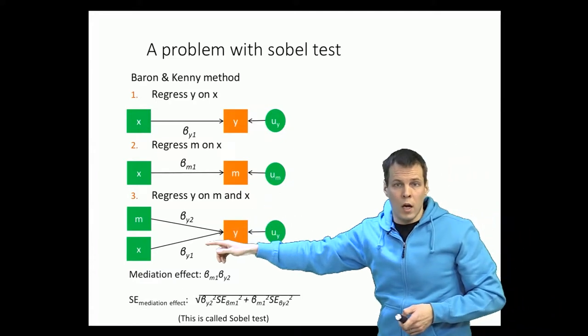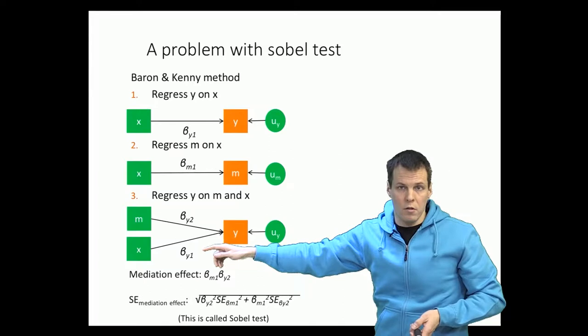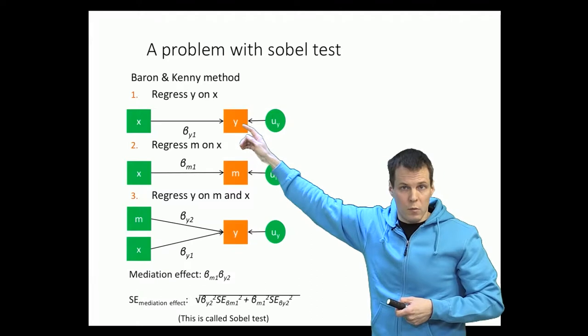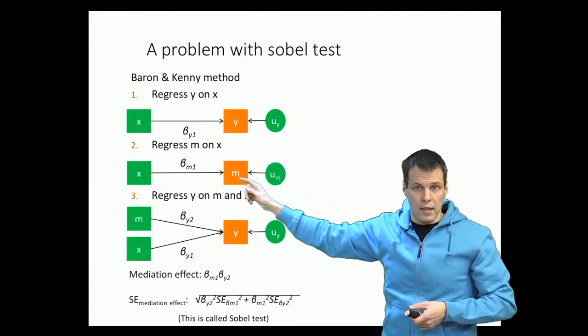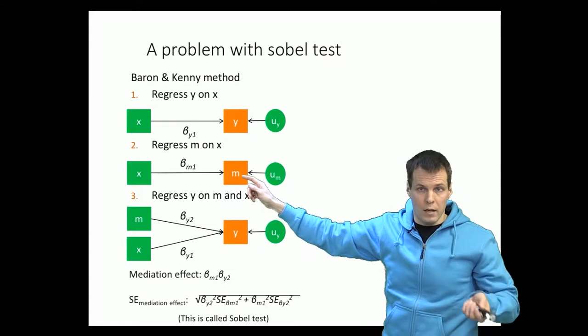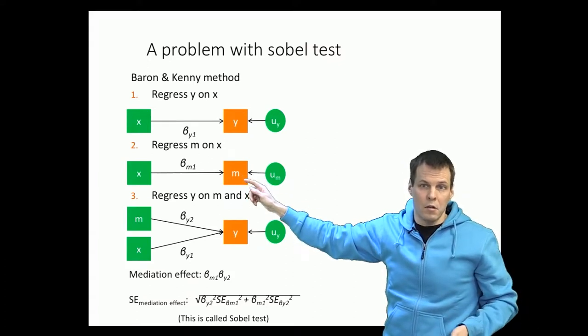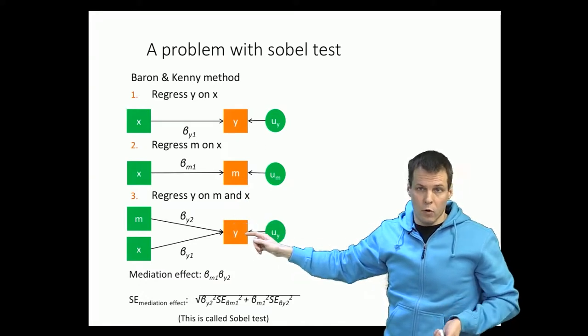If beta y1 is non-significant, we conclude that there is full mediation. So the idea is that we first check whether there is an effect to be mediated. We regress y on x, then we regress m on x to assess whether m depends on x. If m doesn't depend on x, then it can't be mediated. Then we regress y on m and x to see whether it's a full or a partial mediation.